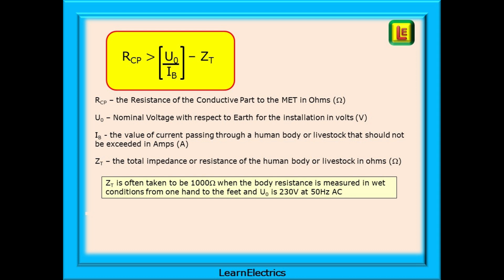Finally, ZT is the total impedance or resistance of the human body or livestock in Ohms. This information can be found in tables that list various situations, but in general, we take the figure to be 1,000 ohms, measured between a hand and the feet, in damp conditions.